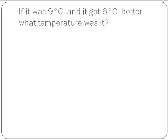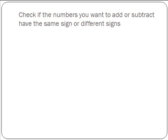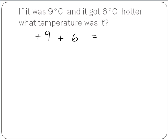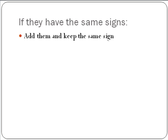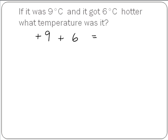We'll start with this problem. If it was 9 degrees Celsius and I got 6 degrees hotter, what temperature was it? So here we have plus 9, and I got 6 degrees hotter is plus 6. The first thing you always do in these problems is check if the numbers you want to add or subtract have the same sign or different signs. So if we look at this question, they have the same sign. So if they have the same sign, we add them and keep the same sign. So 9 and 6 is 15, and keep the same sign is plus 15. So our answer is plus 15 degrees Celsius.